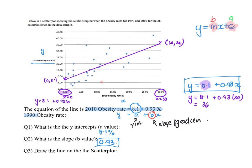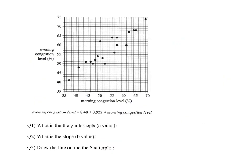Let's do another one. We have an evening congestion level getting determined by the morning congestion level. This is still going to be our y, this is still our x. If you look here on this equation, we've got y equals, there's my a value, there's my b value, and that's my x. So really the equation, if we're just using x and y, would look like y equals 8.48 plus 0.922 times x. But obviously it's important to use the variable names.